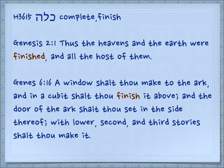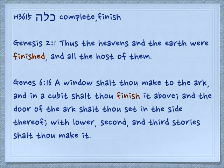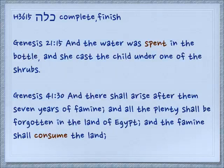To get the related verb we add a hey. We have a verb kala, which means to complete or finish. Genesis 2:1: 'Thus the heavens and the earth were finished, and all the host of them.' Genesis 6:16: 'A window shalt thou make to the ark, and in a cubit shalt thou finish it above.' Genesis 21:15: 'And the water was spent — it was finished — in the bottle, and she cast the child under one of the shrubs.'